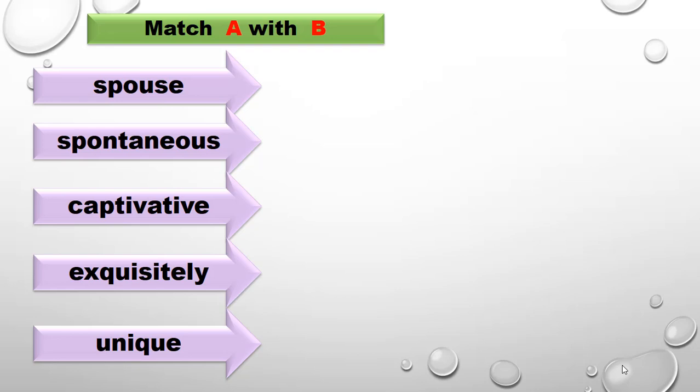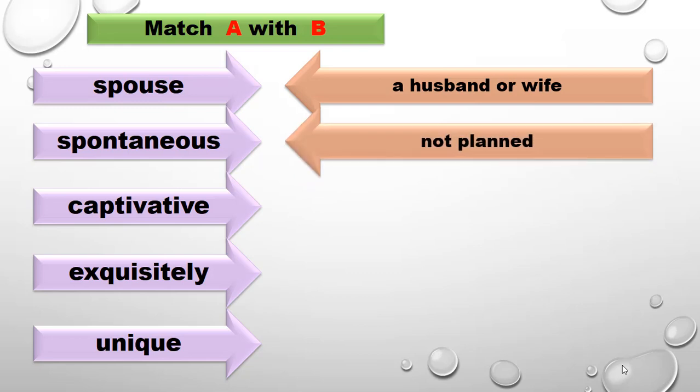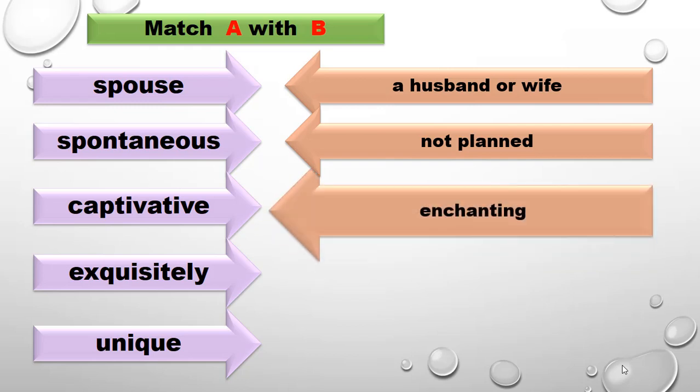The sixth word is 'spouse.' Spouse means husband or wife. In Tarnetar Fair, men and women came there to seek or find a spouse. Next is 'spontaneous.' Spontaneous means not planned.